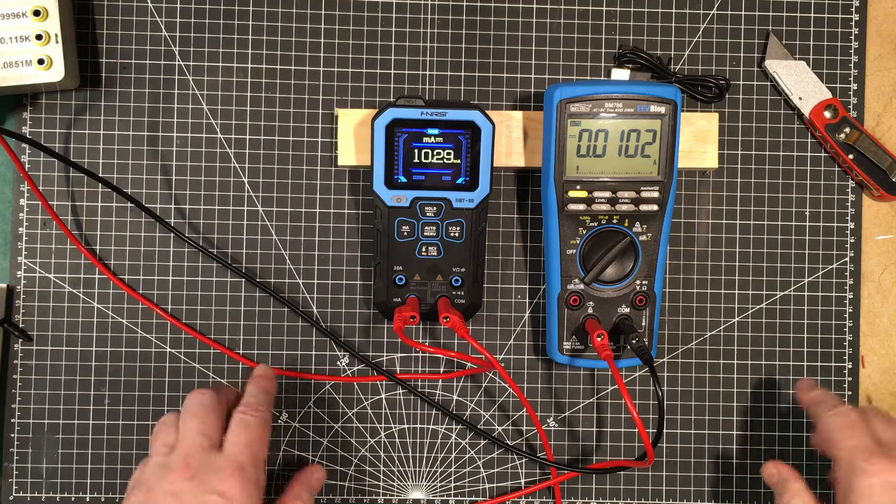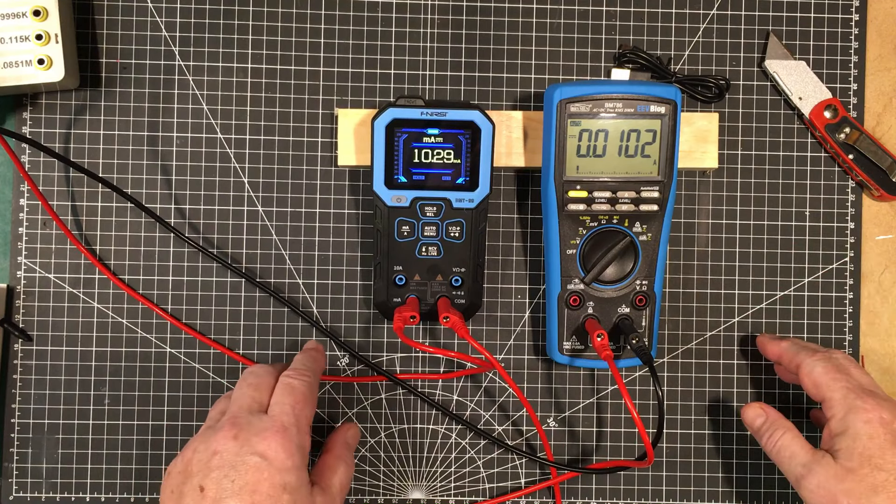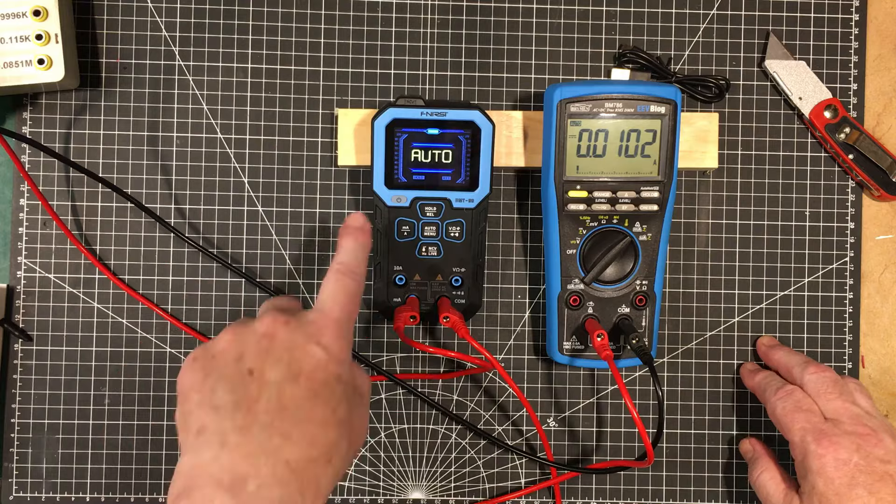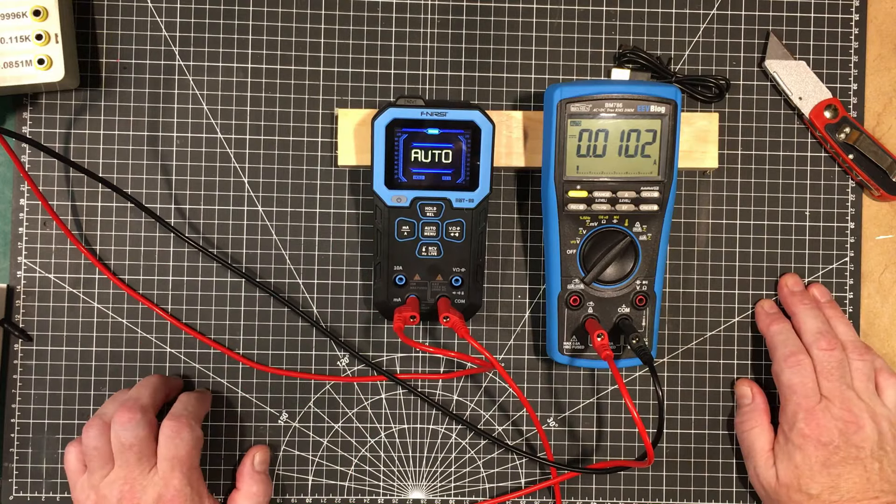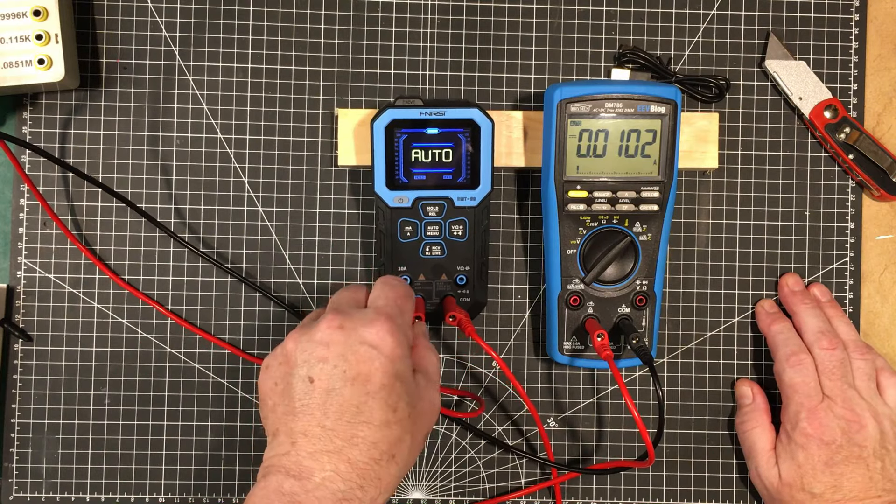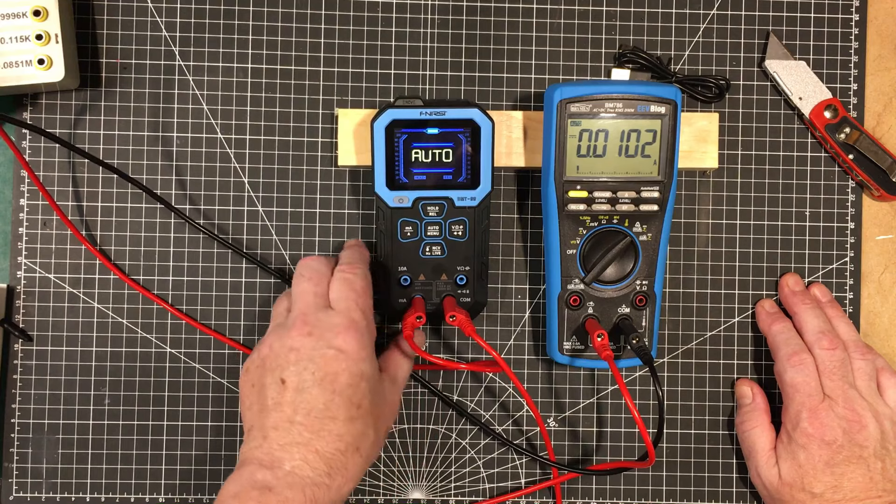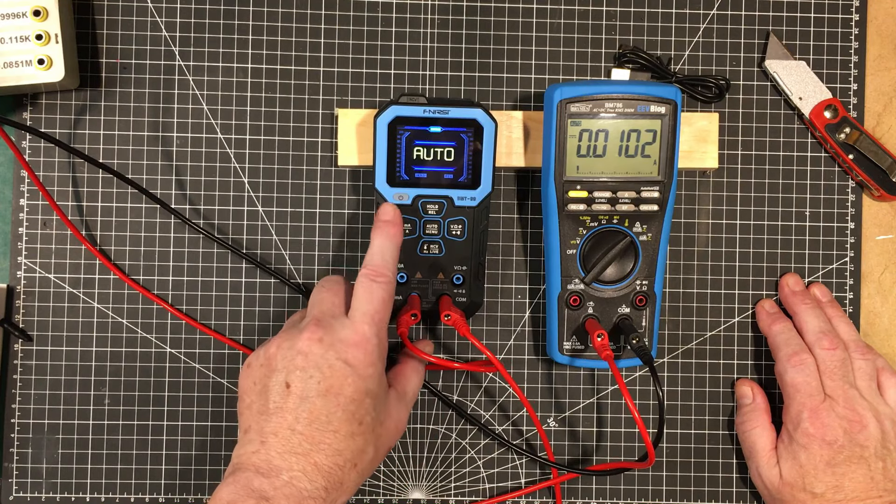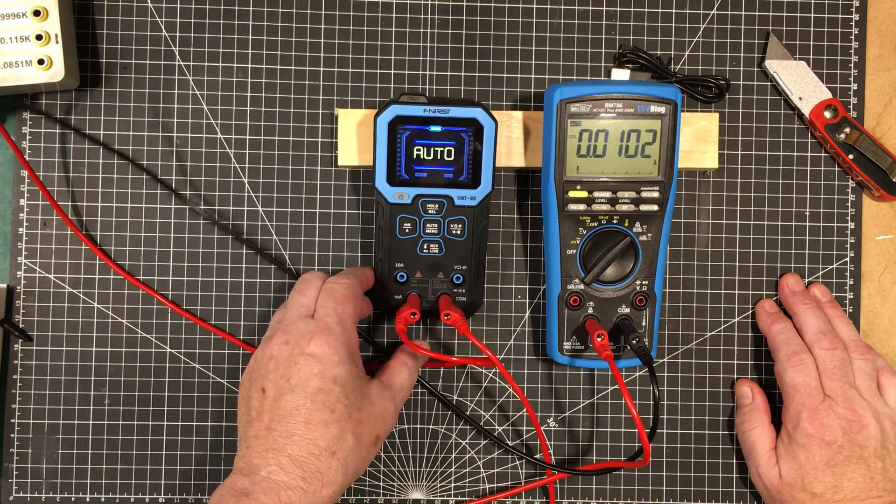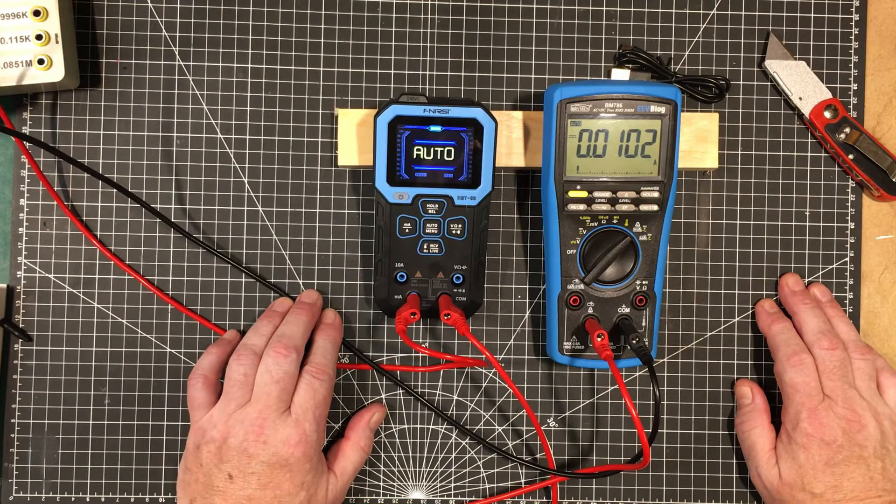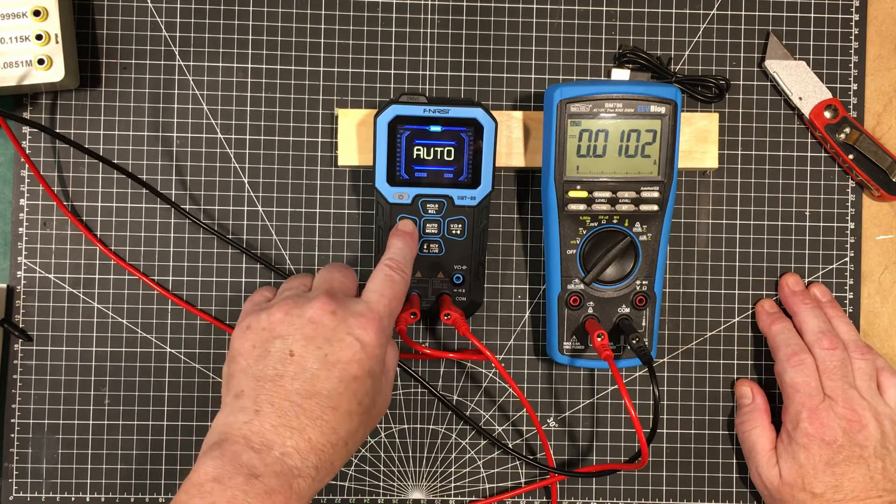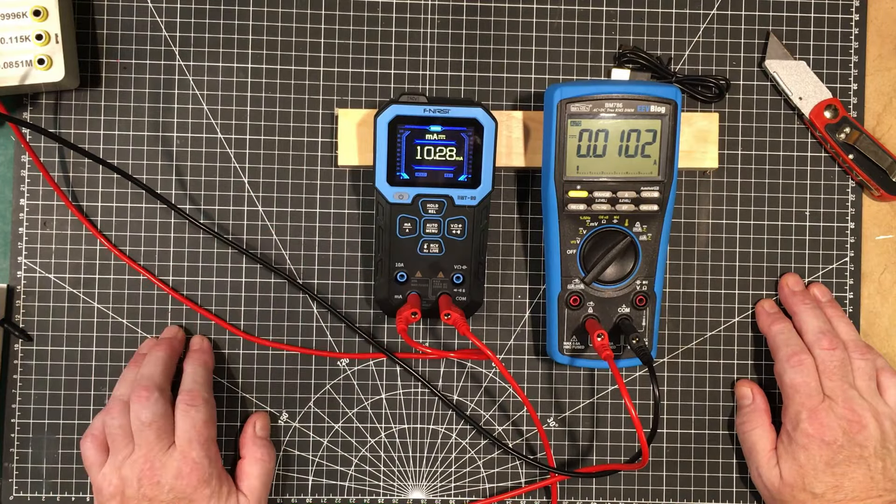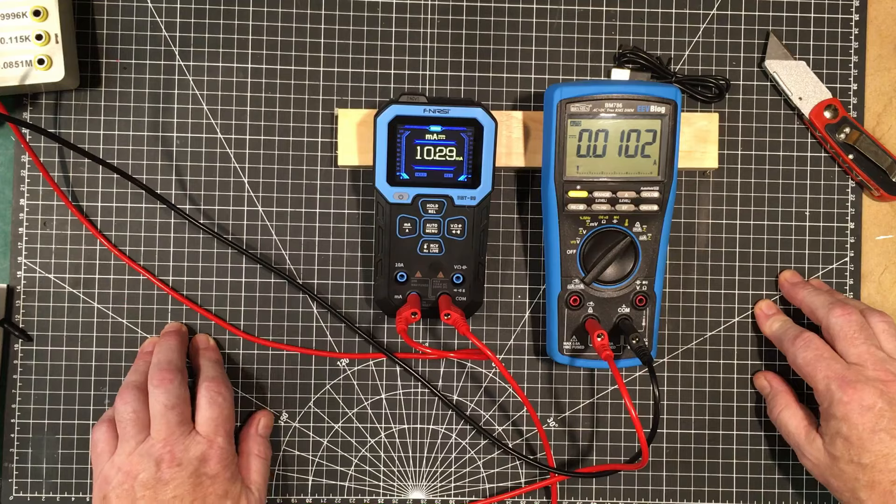So it's not able to auto. So if I go into auto mode, it doesn't detect current automatically, even though the inputs are different for current. So you'd think it would, but it doesn't. So in current mode, you have to select the mode first. So we'll select that and we're in milliamp mode. And there we are at 10.29 milliamps.